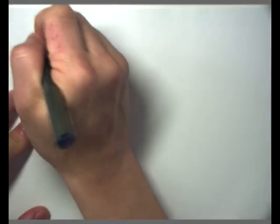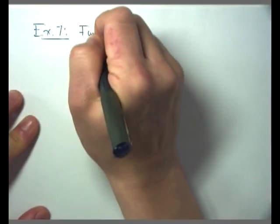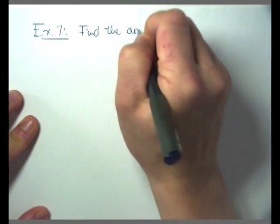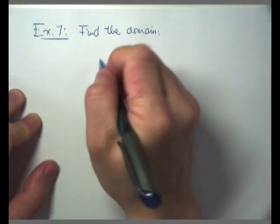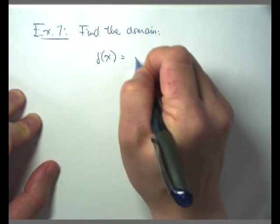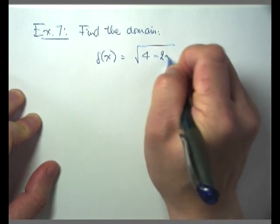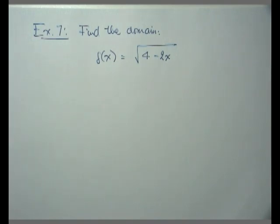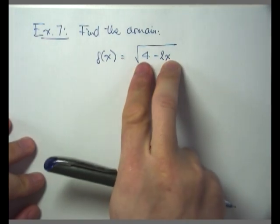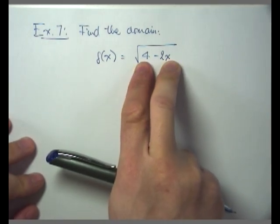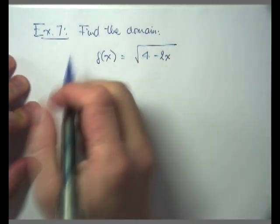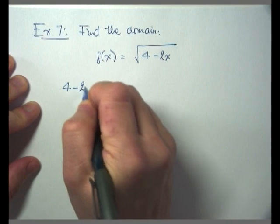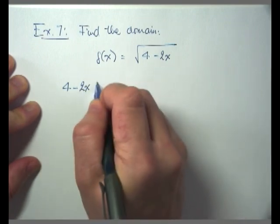In another example — example number seven — we want to find the domain. My function is f of x equals the square root of 4 minus 2x. This function only runs into the second concern, where we have a square root. Keep in mind we require the quantity underneath the square root to be non-negative, so I'm going to set up the inequality: 4 minus 2x greater than or equal to 0, because 4 minus 2x is the quantity underneath the square root and I want that quantity to be non-negative.